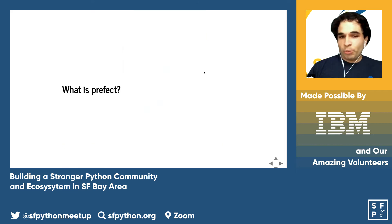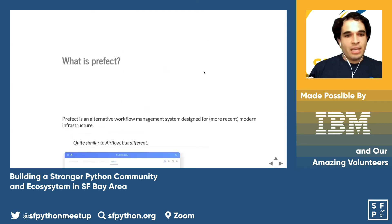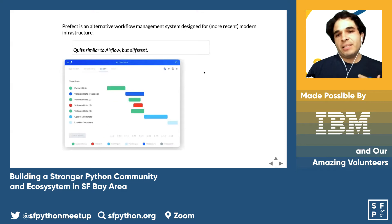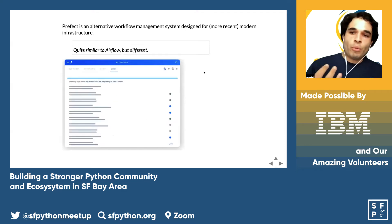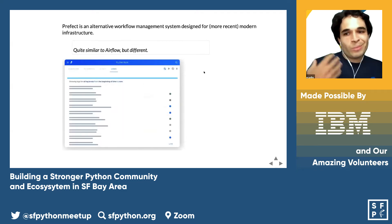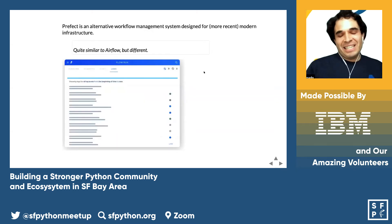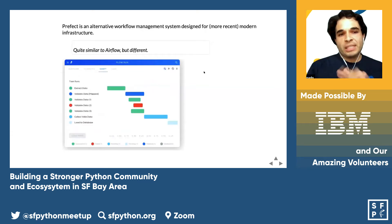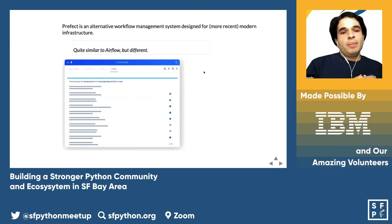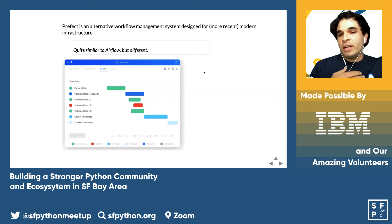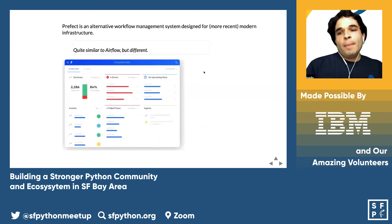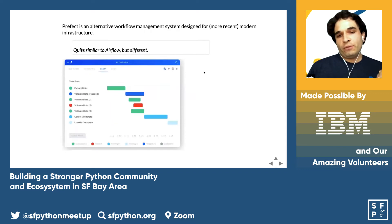And what is Prefect? Prefect is an alternative workflow management system designed for modern, up-to-date infrastructure. This workflow management system, or open-source tool, is quite similar to Airflow or Luigi — Luigi was made by Spotify, Airflow made by Airbnb — but it's different in its own way, and that's what makes it a differentiator.